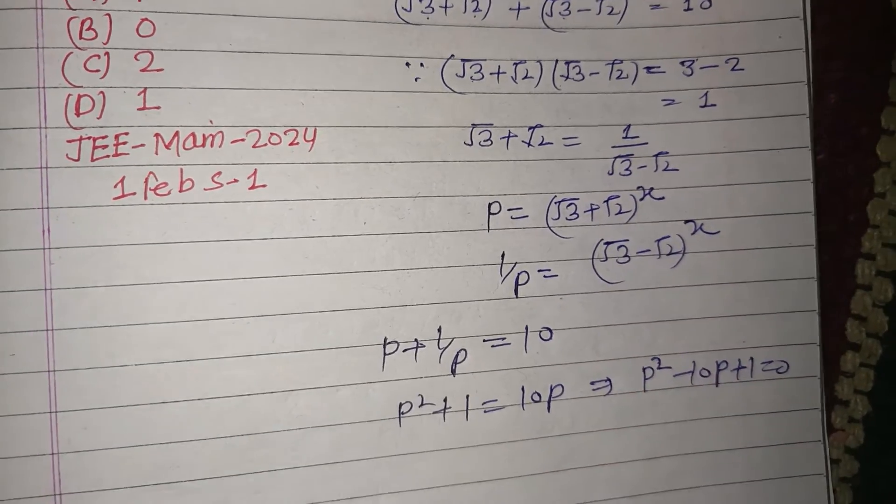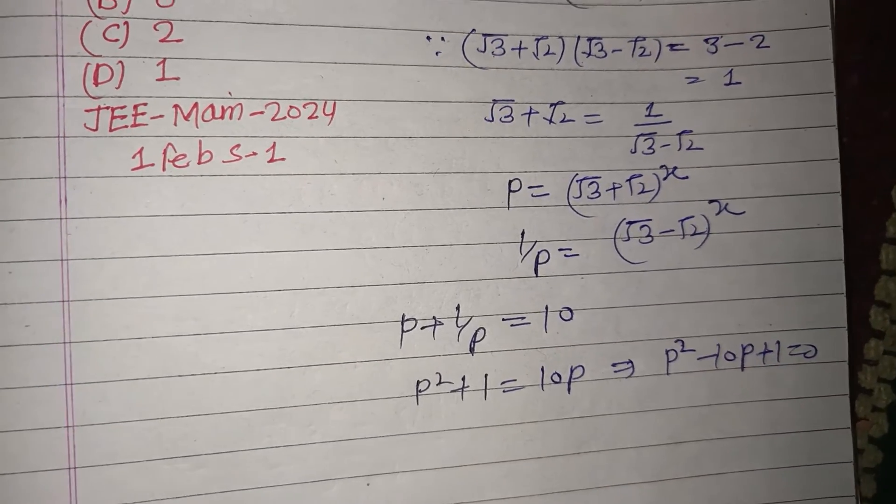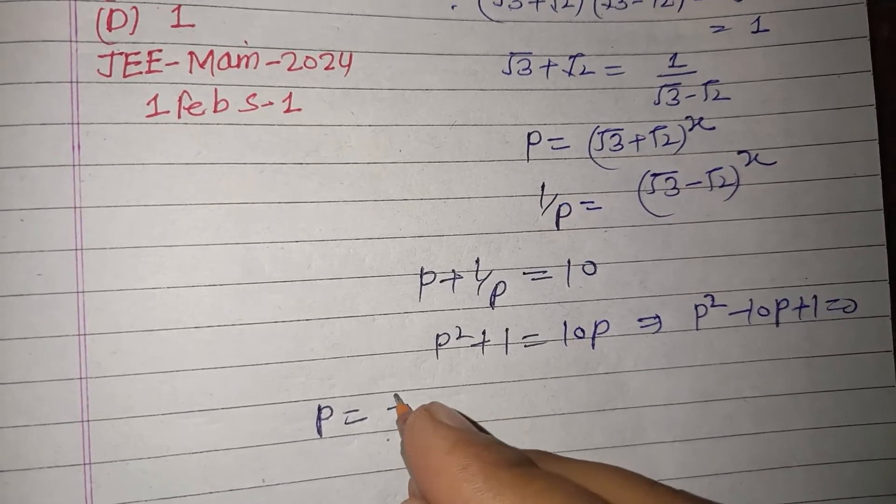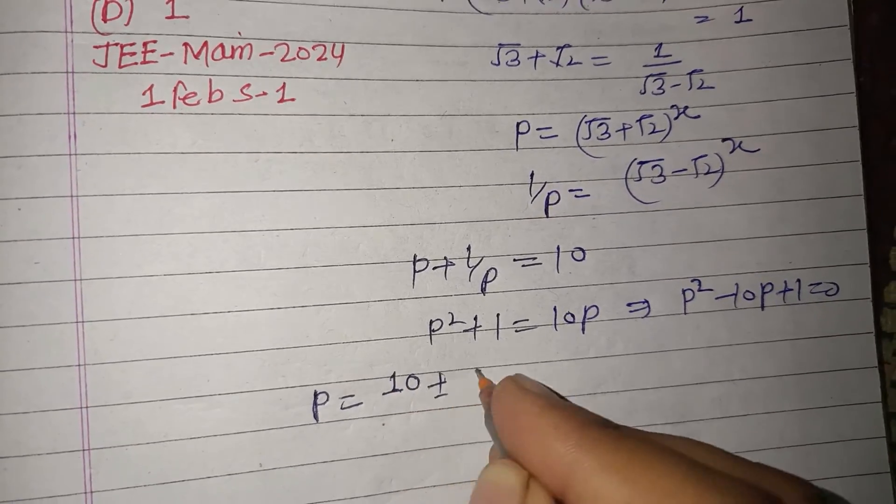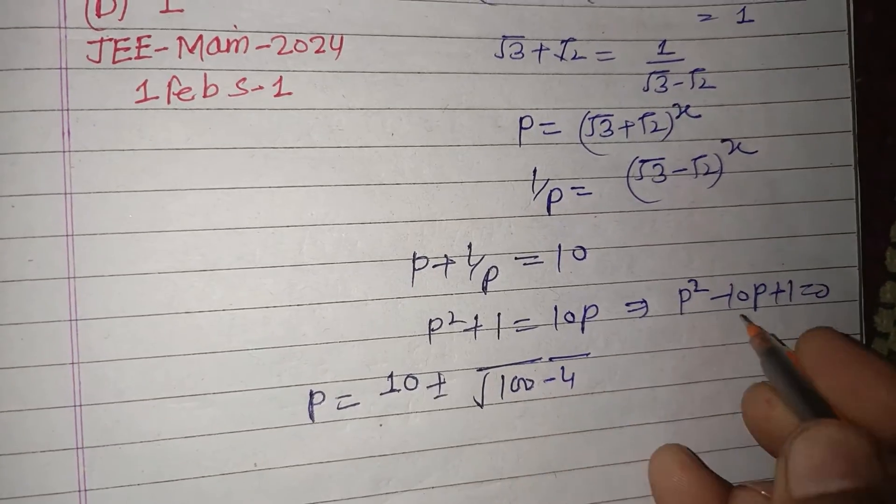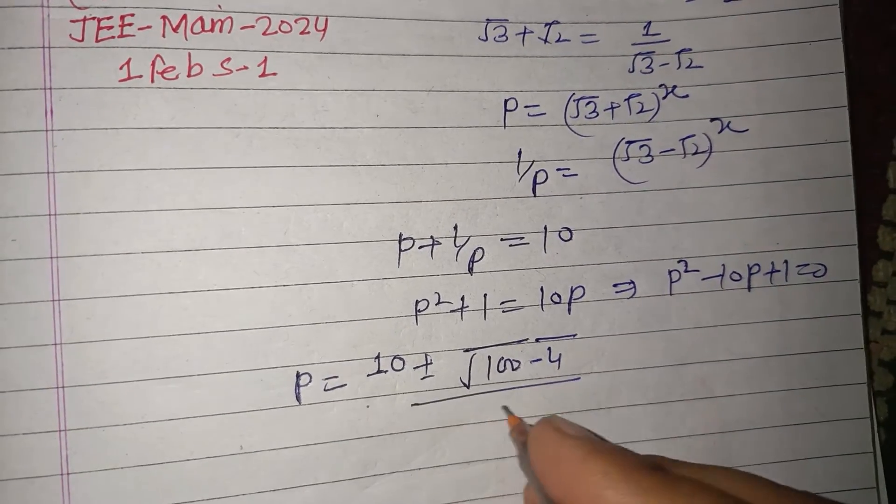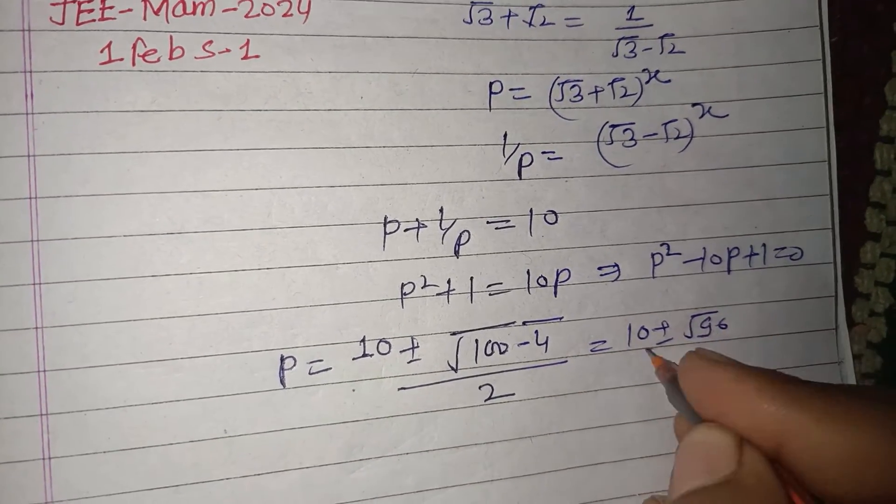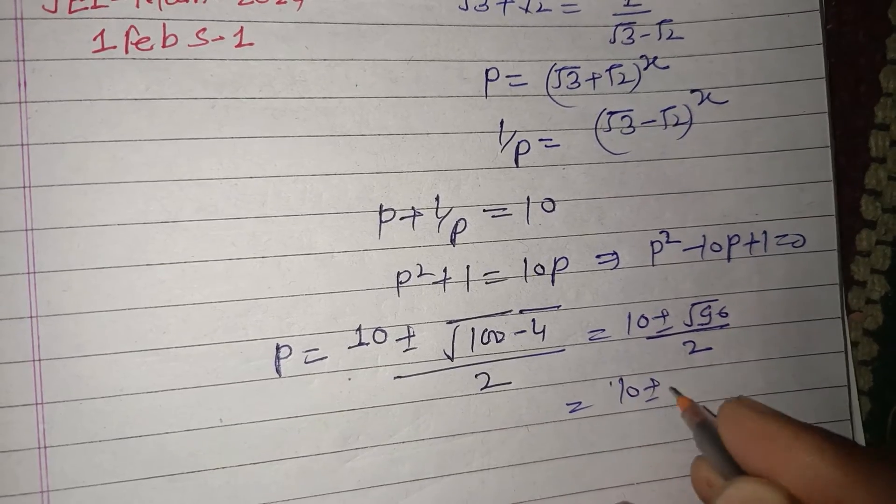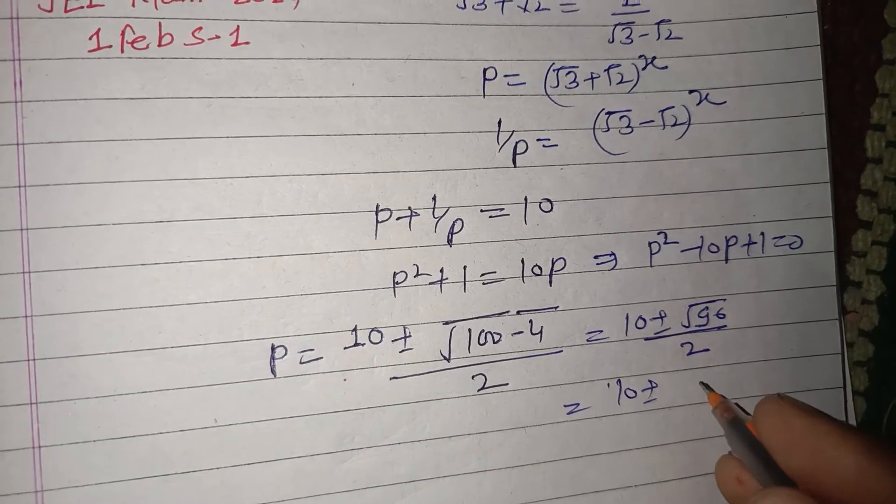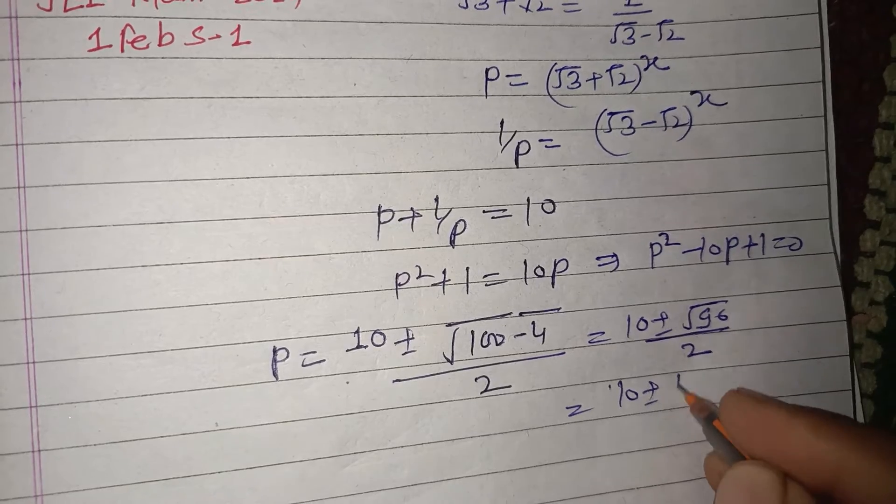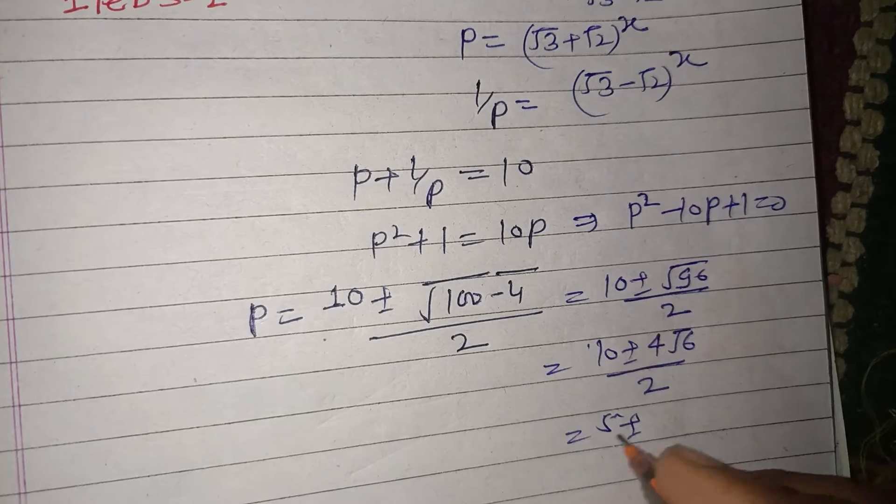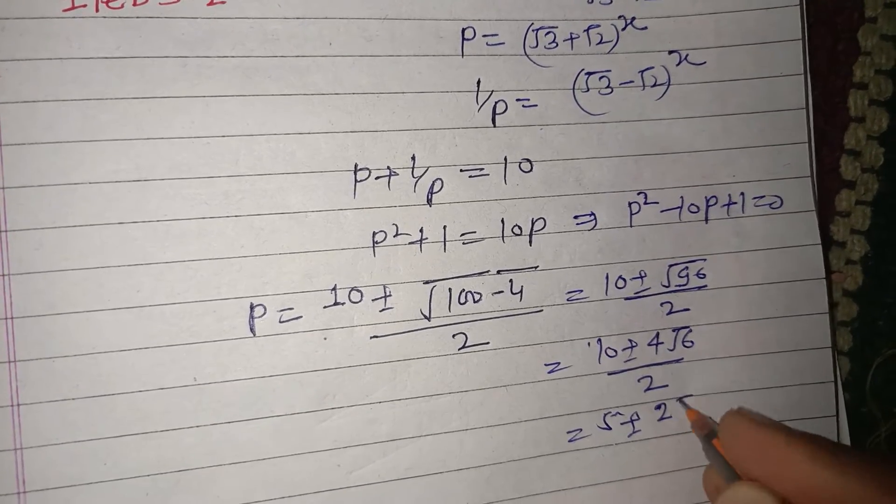This is a quadratic equation. We can find its solution using the quadratic formula. So p = (10 ± √(100 - 4))/2 = (10 ± √96)/2 = (10 ± 4√6)/2. Finally, we get p = 5 ± 2√6.